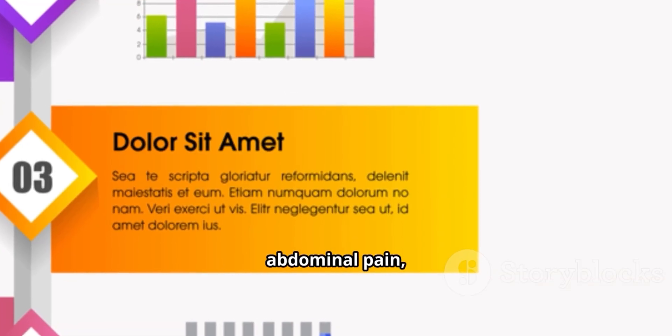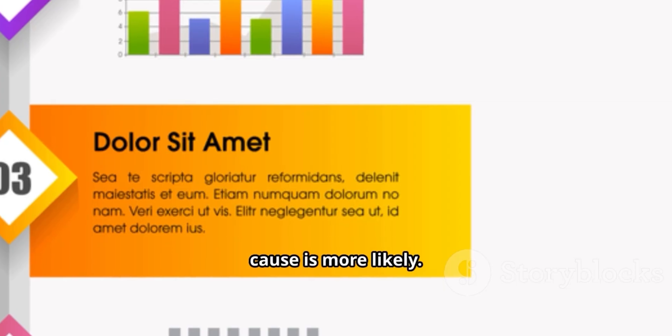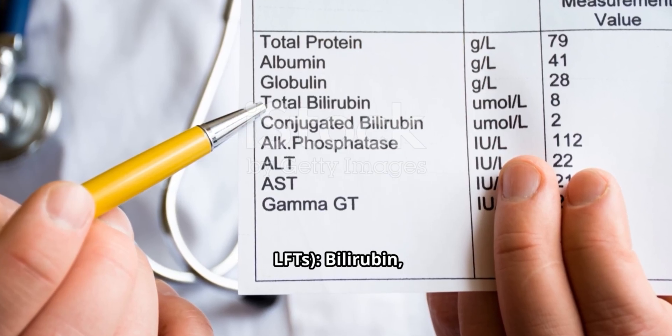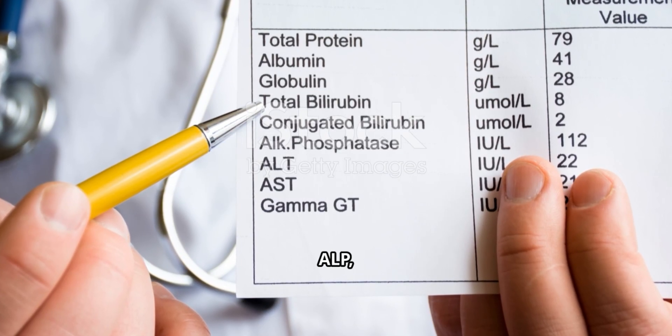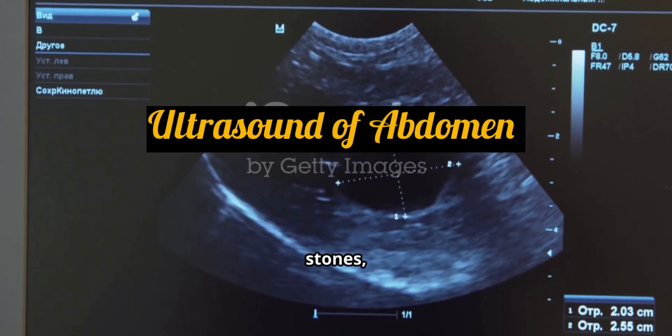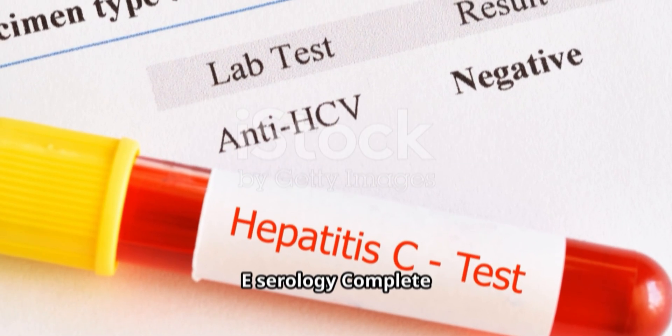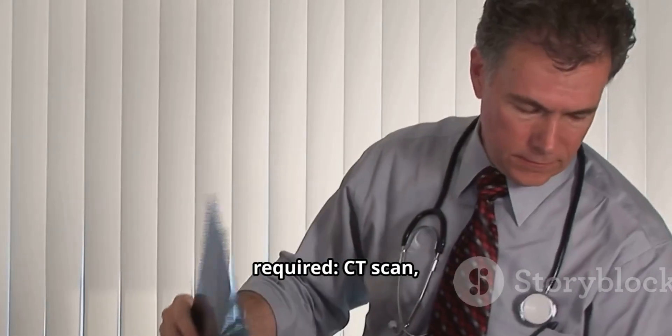Our patient has dark urine and mild right upper abdominal pain, so an obstructive or hepatocellular cause is more likely. The basic workup includes liver function tests — bilirubin, ALT, AST, ALP and GGT levels — ultrasound of the abdomen to rule out obstruction, stone or mass, and viral markers for hepatitis A, B, C serology. If required: complete blood count, CT scan, MRCP, ERCP.